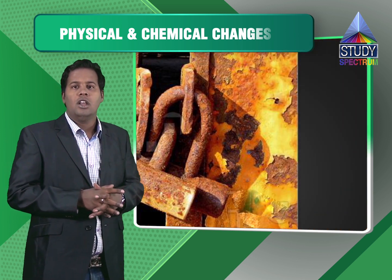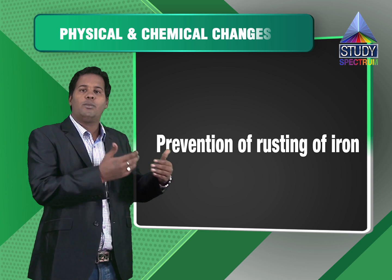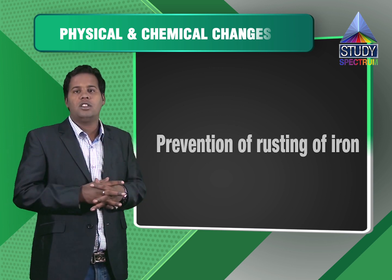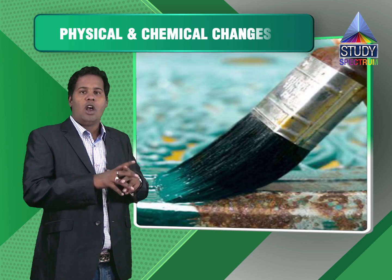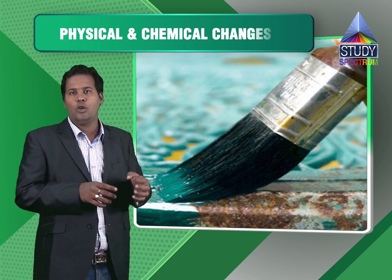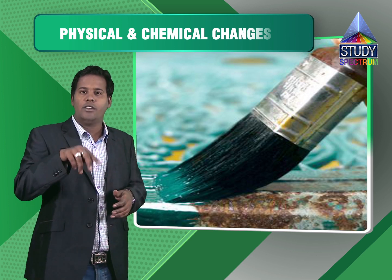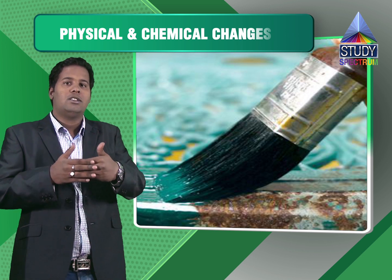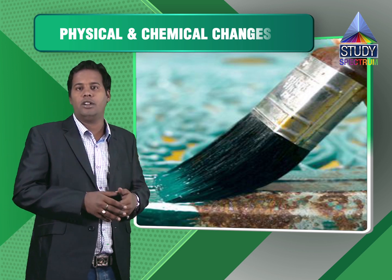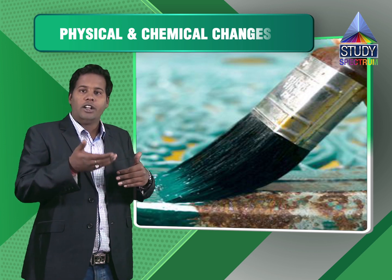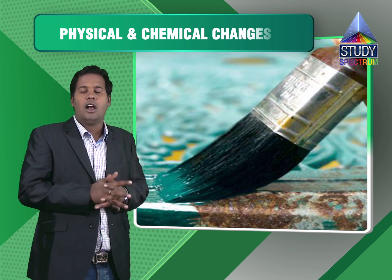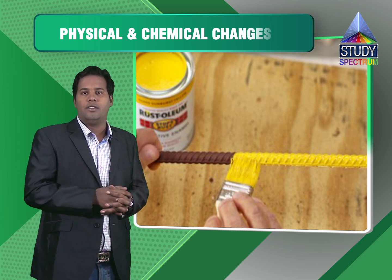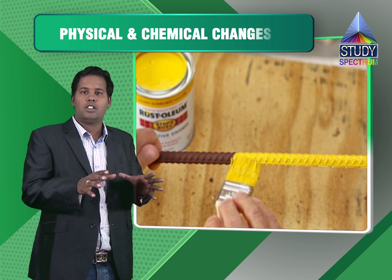How to prevent this rusting of iron? Because rusting causes heavy losses — you have to replace the metal again and again. One of the common processes is painting. If you have grills on your windows, those are made of iron rods, and black paint or other colour paints are applied on them. That paint prevents the iron from coming in contact with the humid environment — oxygen or moisture — and will prevent iron from getting corroded or rusted and will not deteriorate the parent metal itself.